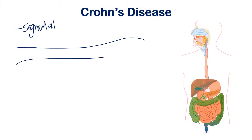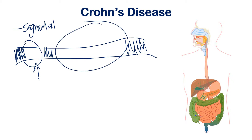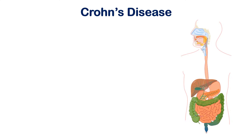Let's say you have some damage here, and then it stops a little bit, and then damage goes here, and then damage comes over here — it can just be random. Basically, the damage in Crohn's disease is never continuous. Notice that some areas are healthy but other areas are damaged. This is a feature of Crohn's disease not present in ulcerative colitis: it's called skip lesions.